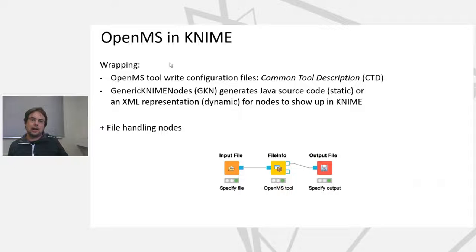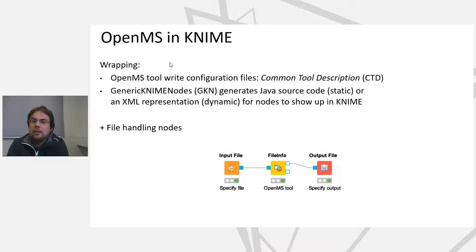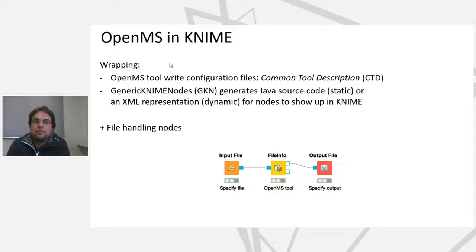Our tools can describe their parameters by writing out a so-called Common Tool Description (CTD) file. Our generic KNIME nodes tool uses this to generate the actual Java source code in a static or dynamic way, so we can load these tools and use them in KNIME. We have also extended KNIME via the generic KNIME nodes, which also handle files and convert them back into KNIME tables for OpenMS.